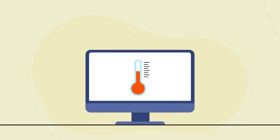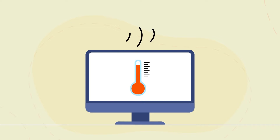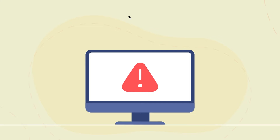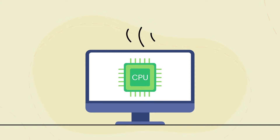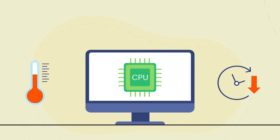All devices have a tipping point in terms of heat tolerance. Beyond this point they start going into shock, resulting in serious damage to the device and the network. The CPUs in our network are no different. Fluctuations in temperature lead to more downtime and contribute to gradual performance decline in CPUs.